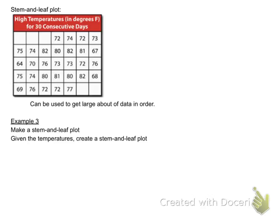The next one is a stem and leaf plot. Stem and leaf plots are great because they are all about taking large groups of data and making them or putting them in order very quickly. So, above here, we have the temperatures of 30 days. So, you have 30 different numbers.